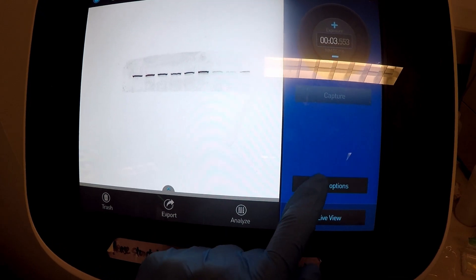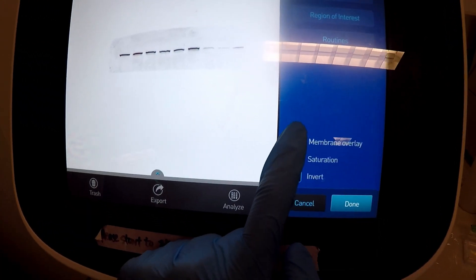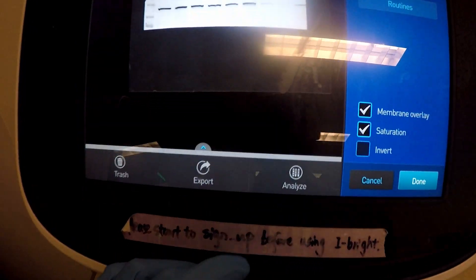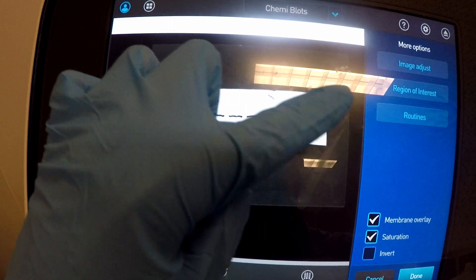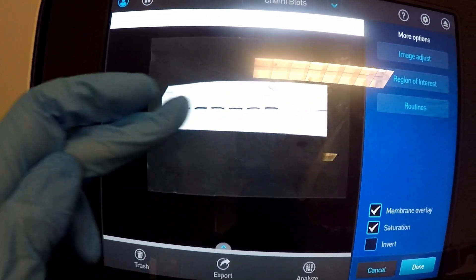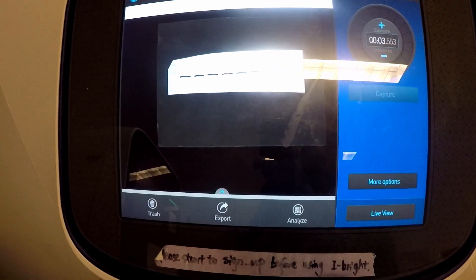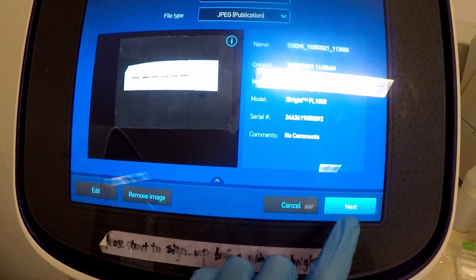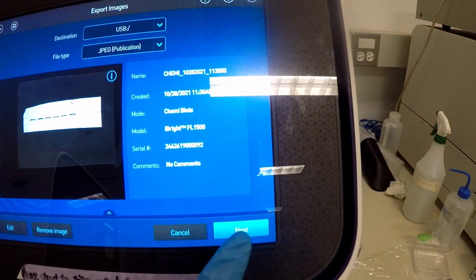What I like to do, and what's much easier to see when you're actually going to edit these down, is select membrane overlay. Now you can actually see the outlines of the membrane, what it actually physically looks like, along with the bands itself. Once you have this, just press done.